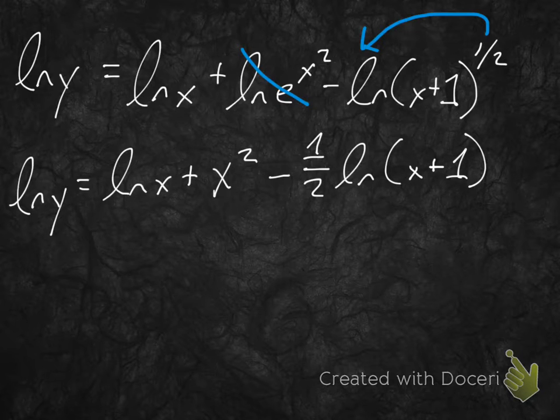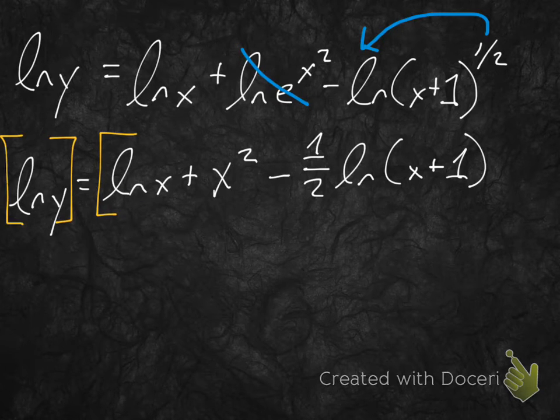Now, what do we need to do? Well, I vote that we go ahead and start taking prime of both sides. So, let me put some brackets around this. And, we can begin to take prime. So, prime of each side. ln y, what is prime of ln y? Well, we need to have a little aside here, a little chat, because, let's think about it this way.